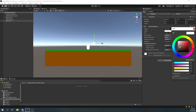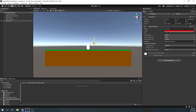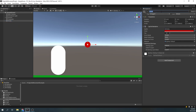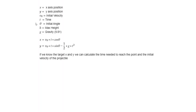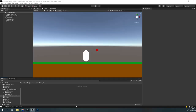To start, let's create a 2D scene, create simple sprites for the ground and the character, and create one sprite for the projectile. Now I know some people get scared whenever they see math, but don't worry — we'll go step by step what these functions mean. The two functions here are used for calculating the x position and the y position at a given time. The variables we'll be using are the x-axis, the y-axis, v0 for the initial velocity, t for time, theta for initial angle, h for max height, and g for gravity.